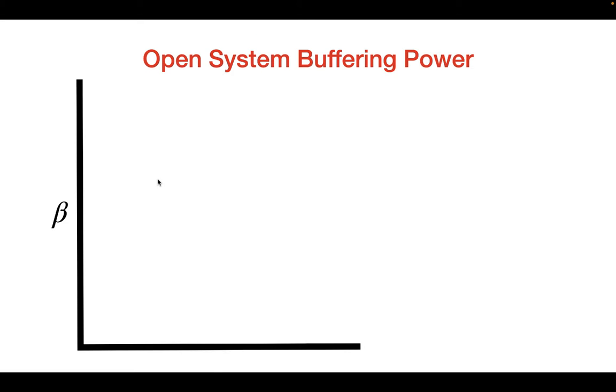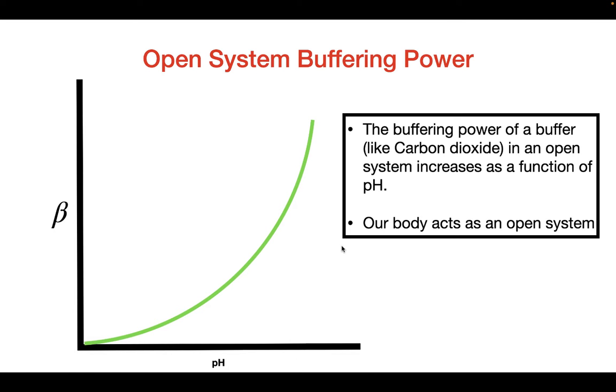Let's take a look at the buffering power of an open system. The buffering power of an open system increases as a function of pH. Our body is going to act as an open system because in our blood vessels, which are really close to the alveoli, it's exposed to the atmosphere inside the alveoli, which allows CO2 to go from the atmosphere into the blood and vice versa.